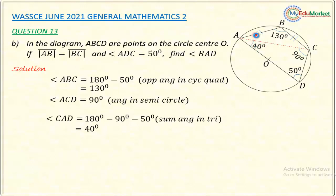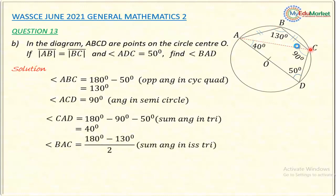Now I need to find angle BAC. Triangle ABC is an isosceles triangle because two of its sides are equal — AB equals BC. In an isosceles triangle the base angles are equal. So angle BAC = (180 minus 130) divided by 2. Subtracting and dividing by 2 gives 25 degrees. So angle BAC = 25 degrees.